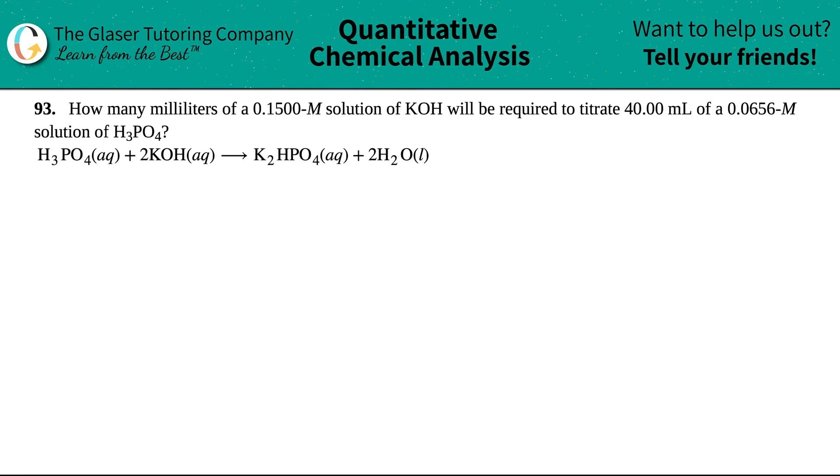Number 93, how many milliliters of a 0.1500 molar solution of KOH, potassium hydroxide, will be required to titrate 40.00 mils of a 0.0656 molar solution of phosphoric acid, H3PO4. And they give us this nice little balanced equation here.